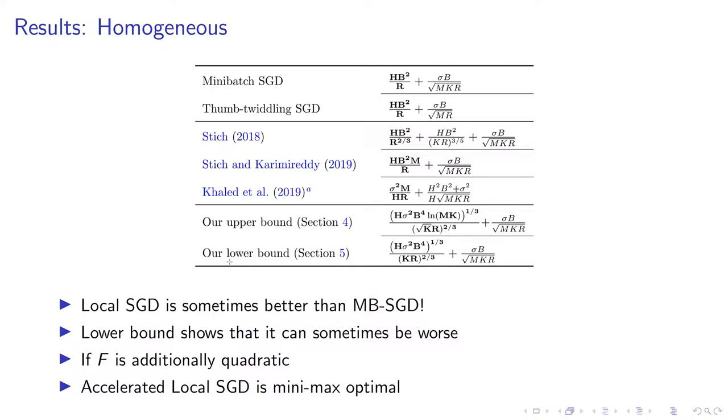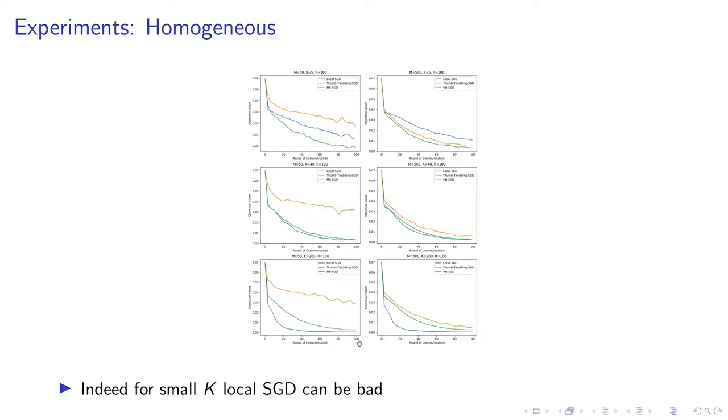Additionally, this result still doesn't close up the question whether local SGD is always better than mini-batch SGD because it's an upper bound. So, we are also providing a lower bound which gives us the unfortunate observation that local SGD is not always better than mini-batch SGD and in fact, for small k and large sigma squared, it can actually be worse than mini-batch SGD. This is slightly unfortunate because in the last two years, a lot of effort has gone into proving upper bounds which could show that local SGD could defeat mini-batch SGD. Besides this, we show that when the function F is quadratic, local SGD actually does not suffer from this lower bound and that it's minimax optimal up to acceleration.